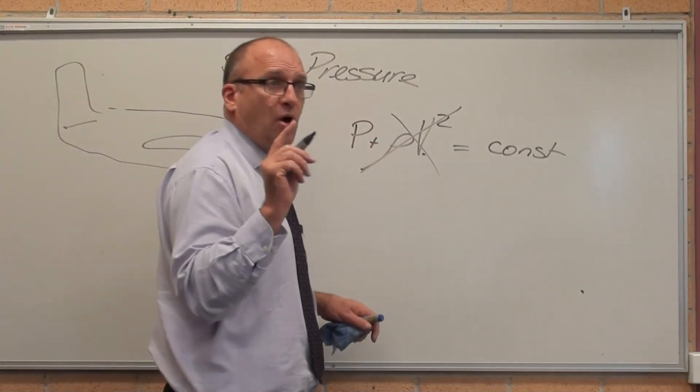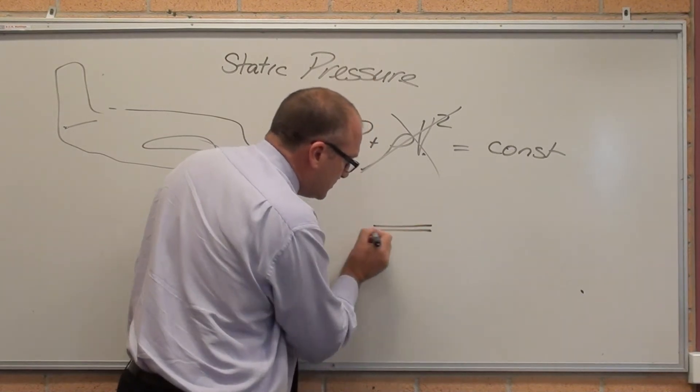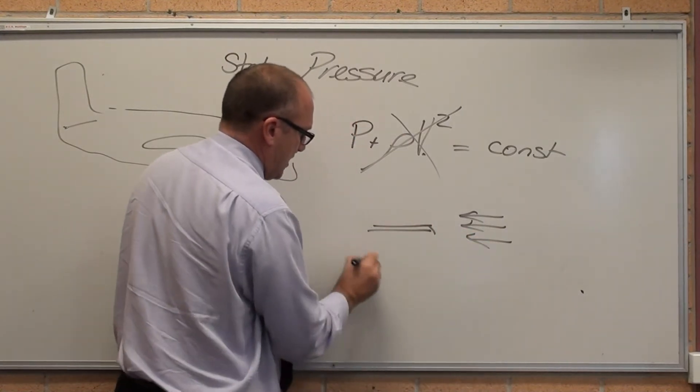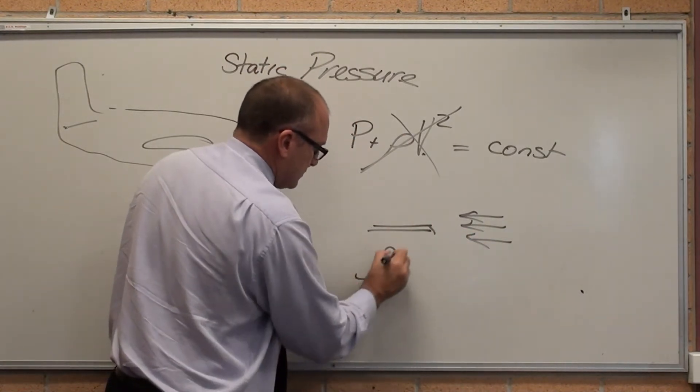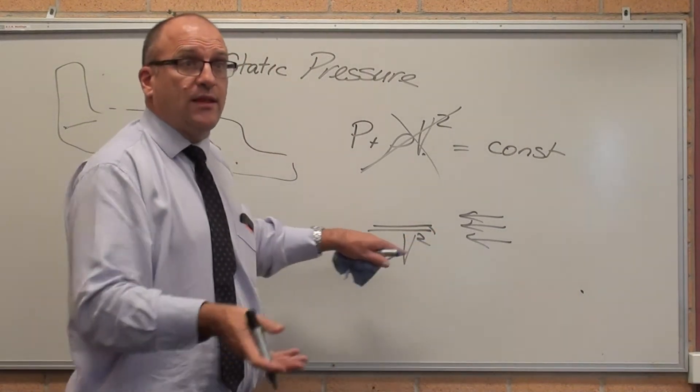So all you need now is you need a pipe pointing straight at the airflow. So there's our airflow. And that is giving us a number, density times velocity squared, then they just work that backwards.